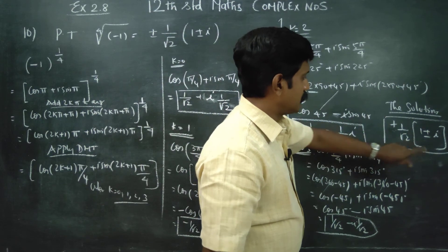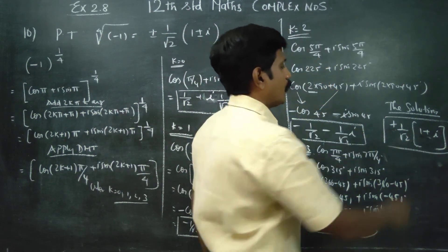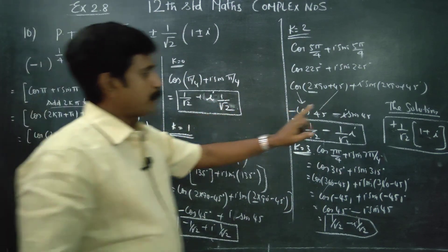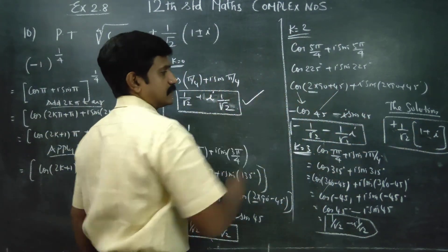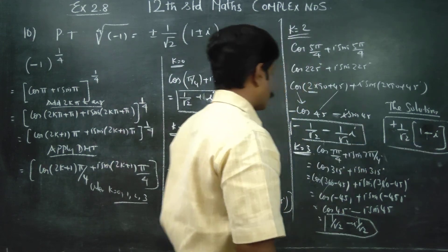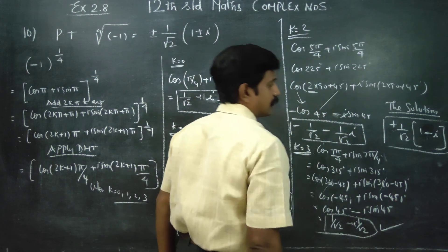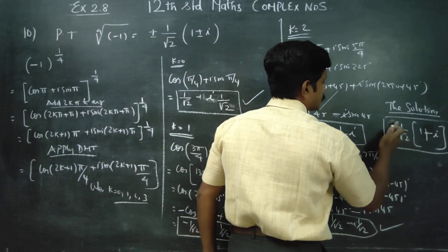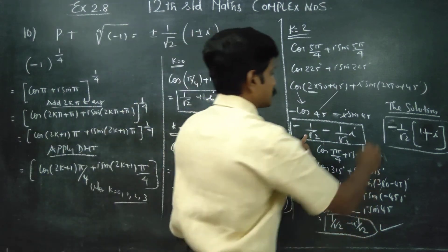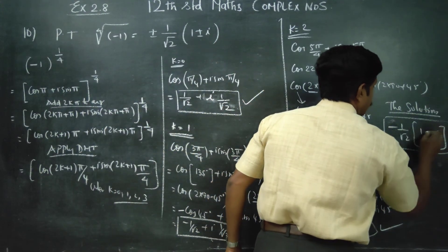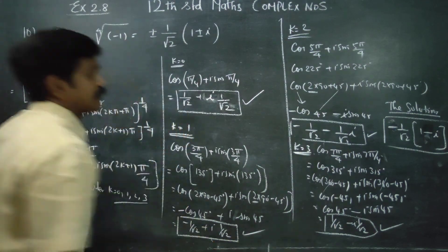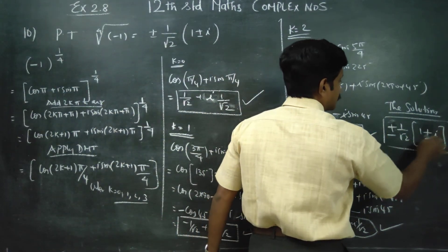A student asks: if I write only the positive values, is that one answer? The teacher confirms: 1/√2 + i/√2 is the first answer. Another student asks about the negative case: 1/√2 − i/√2 — the teacher confirms that is also correct (k=3 answer). The teacher clarifies: 1st answer minus, 2nd answer positive; check the plus or minus signs carefully for all four answers.